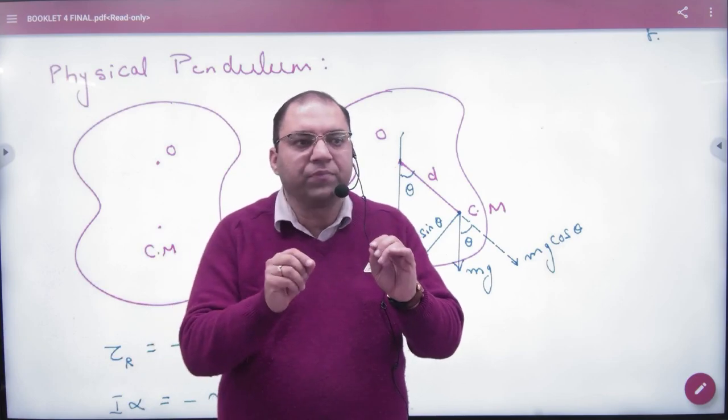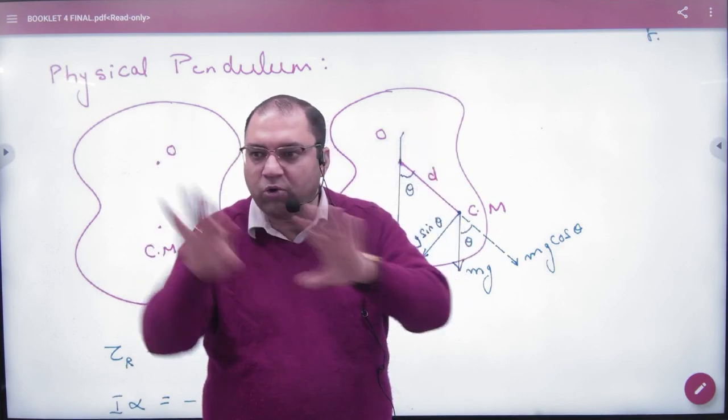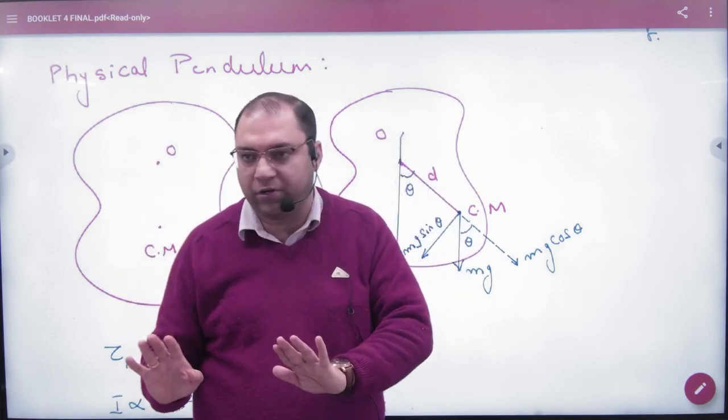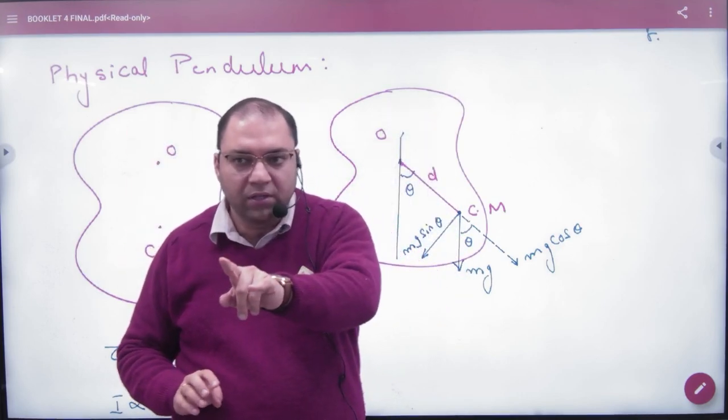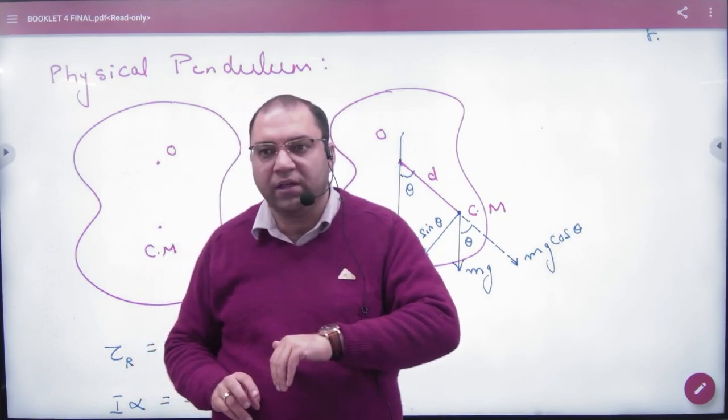Take a photo frame, take a heel. The whole body is going to and fro. It's not a point mass. If there is not a point mass, then it's a physical pendulum. If there is a point mass, then it's a simple pendulum.